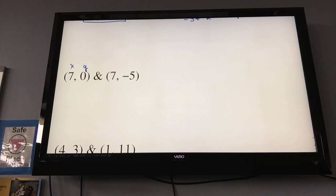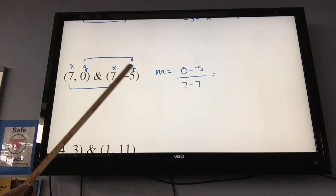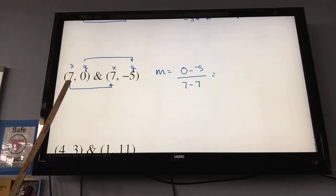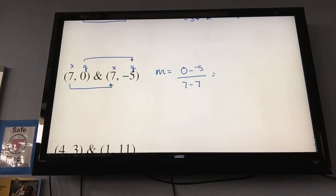All right, so in my next example, x, y, x, y. So, I'm going to take y, which is 0, minus the other y, negative 5. x, which is 7, minus my other x, which is also 7. So, again, I'm taking my y, 0, minus the other y, negative 5. And then x, which is 7, minus the other x, which is also 7. This minus minus becomes plus plus. And I have 0, plus 5, is 5, and 7, minus 7, is 0.